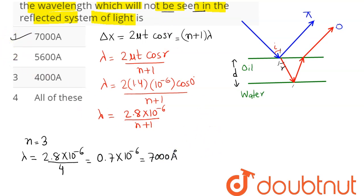Next, for n equals 4, lambda comes out to be 2.8 × 10^-6 divided by 5, which comes out as 0.56 × 10^-6, which is 5600 angstrom, that is option number 2.